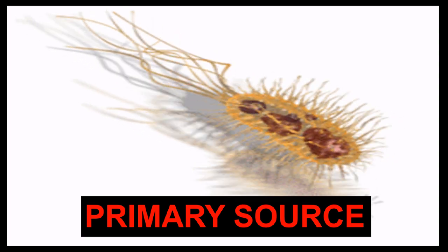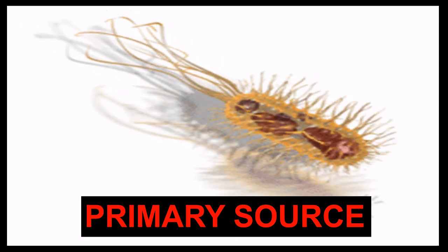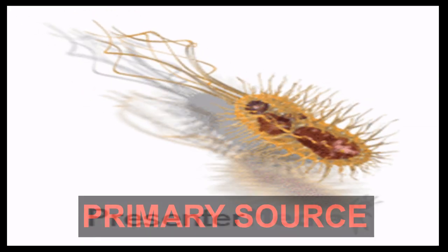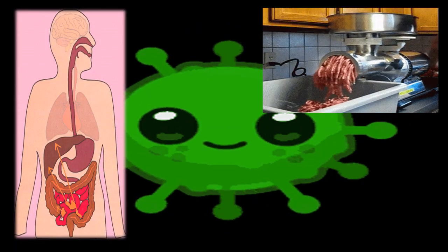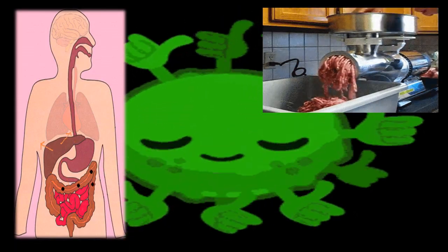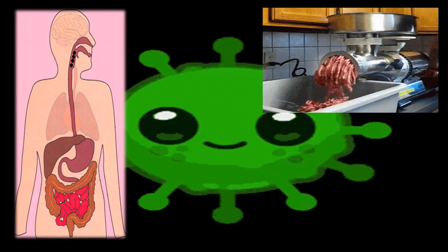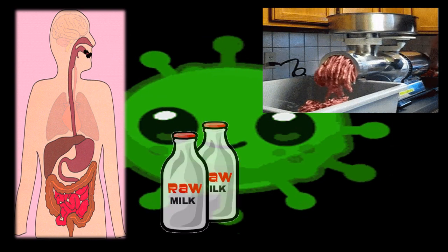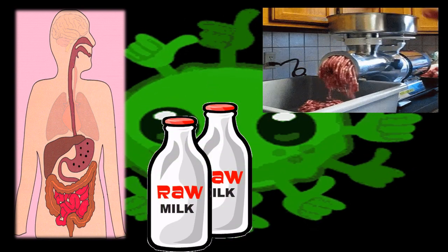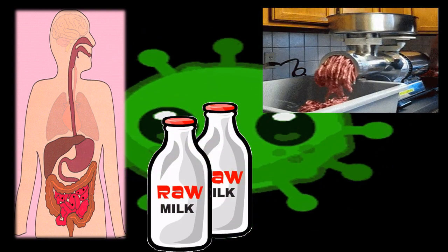Primary source: When meat is processed, sometimes bacteria from the animal's intestines make their way into the meat. This happens more with ground meat because it comes from more than one animal. Additionally, untreated milk — drinking unpasteurized milk which hasn't been treated to kill bacteria — is another primary source.